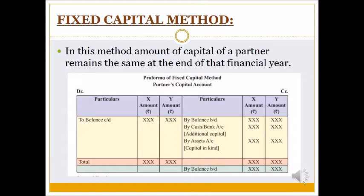Under Fixed Capital Method, see the debit side and credit side. On the credit side, 'By Balance Brought Down' means the opening balance of the partner's capital account. 'By Cash or Bank' means whenever the partner brings anything into the business in the form of cash or cheque, the journal entry is: Cash or Bank Account debited to Partners Capital Account. If the partner brings any assets into the business, the entry is: Assets Account debit to Partners Capital Account. Only these two journal entries will come in Partners Capital Account.